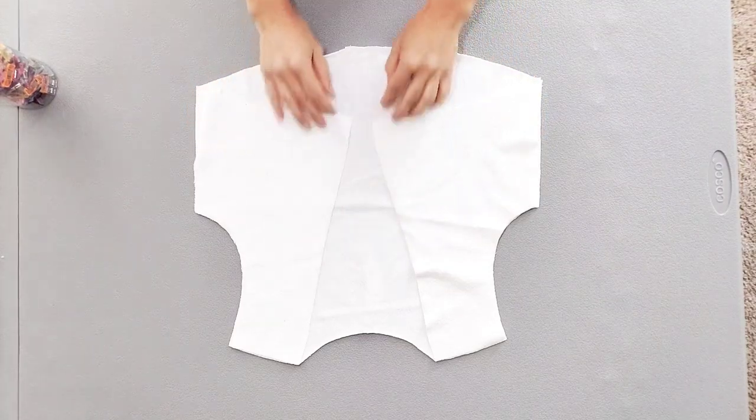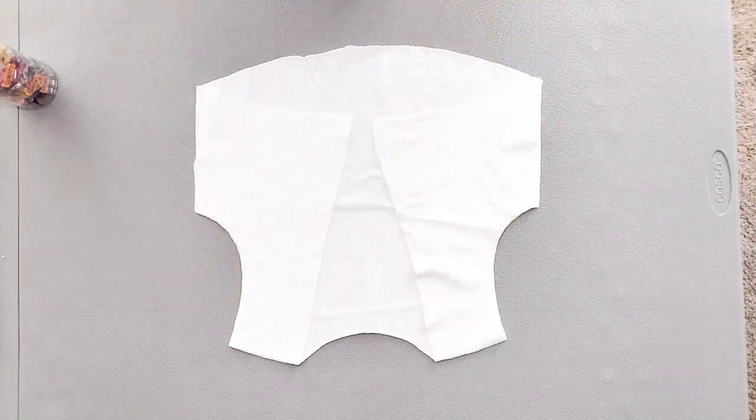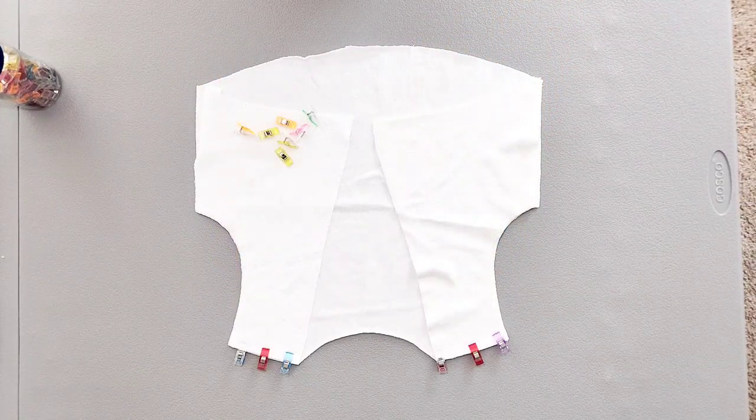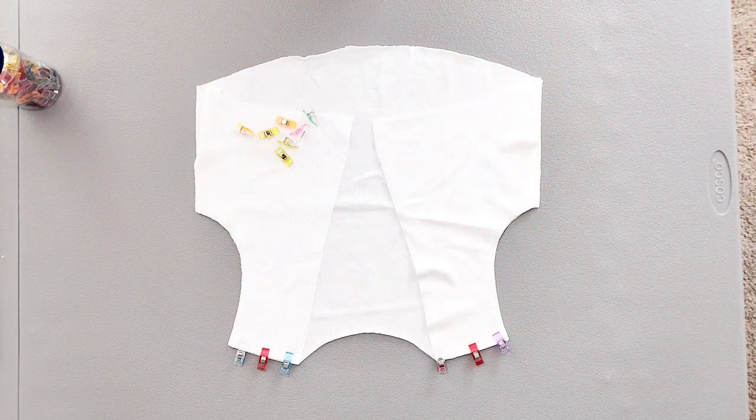Place your front pieces on top of your back piece right sides together and clip your shoulders. Now take it to your serger or sewing machine and sew your shoulders with a quarter inch seam allowance.